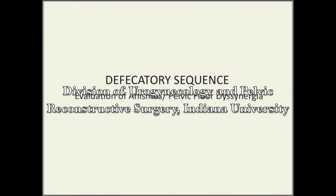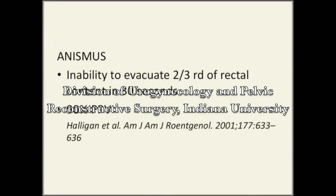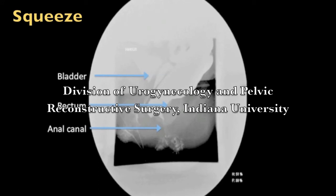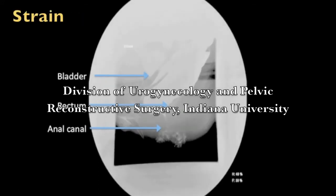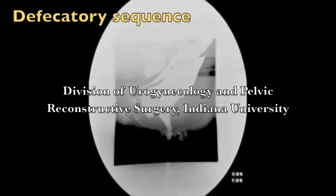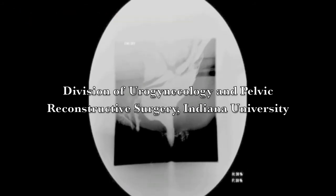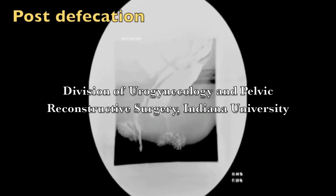Another condition that can be difficult to evaluate on physical exam is pelvic floor dyssynergia, or anismus. Radiologically, this is diagnosed by an inability to evacuate two-thirds of rectal contents in 30 seconds, a criteria with a 90% positive predictive value. This is a patient with a chronic history of constipation. A defecatory sequence is attempted and repetitive contractions of the pelvic floor muscles are seen. After 30 seconds of trying to evacuate, more than two-thirds of contents are retained in the rectum, which is suggestive of anismus.